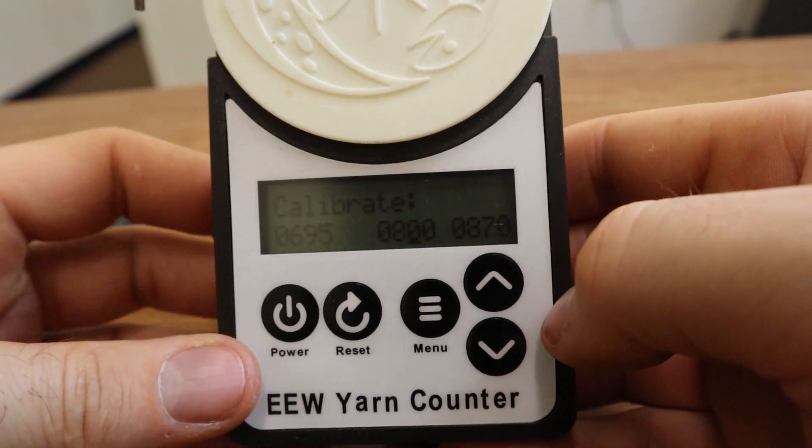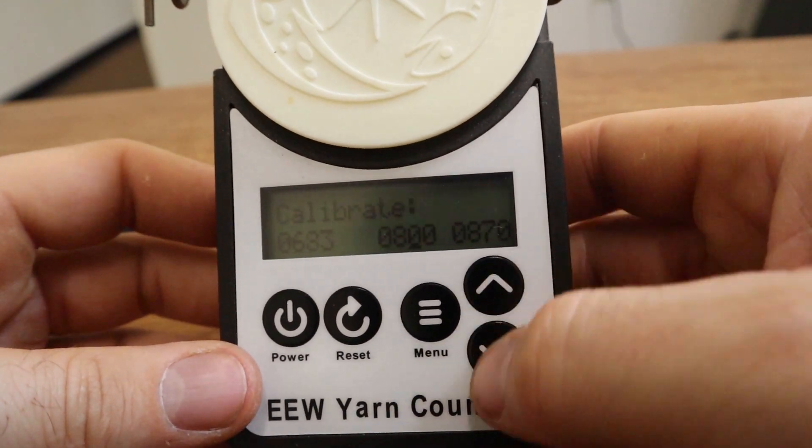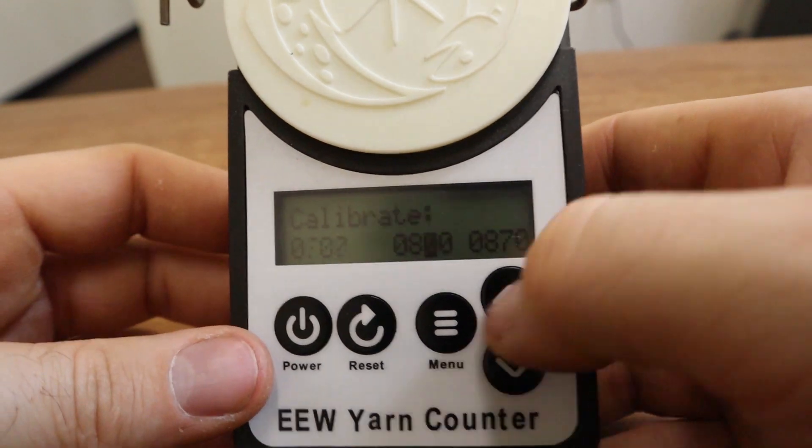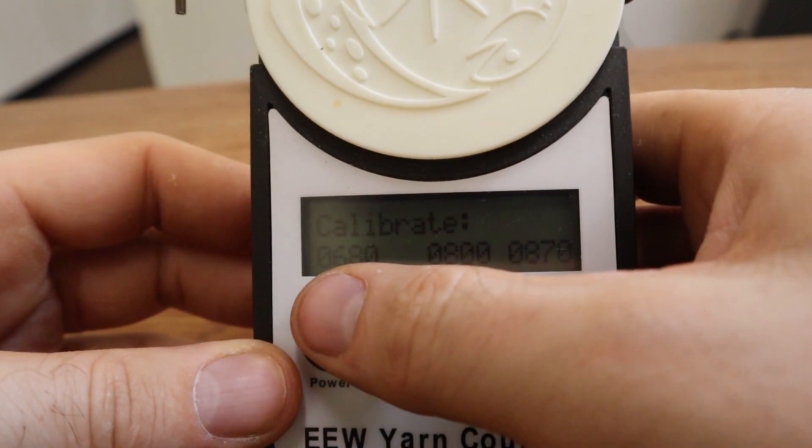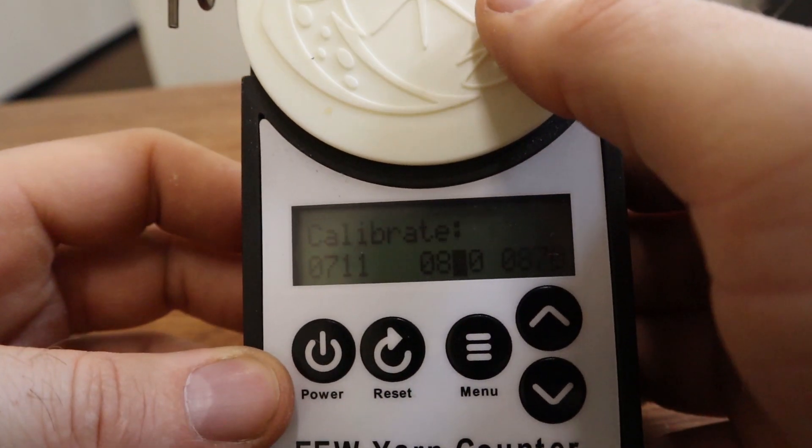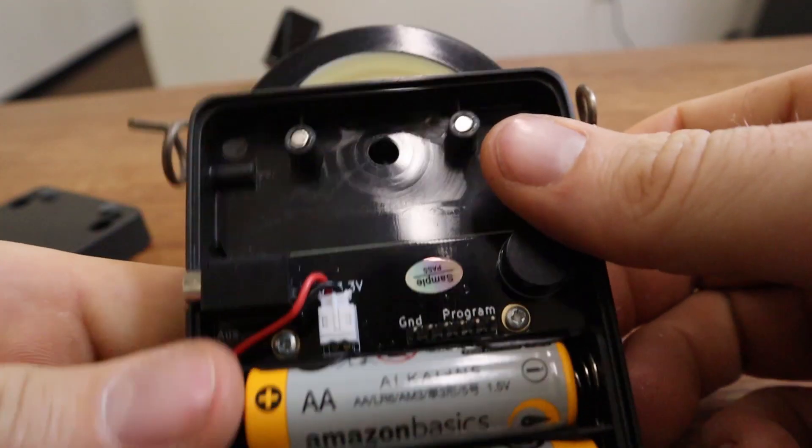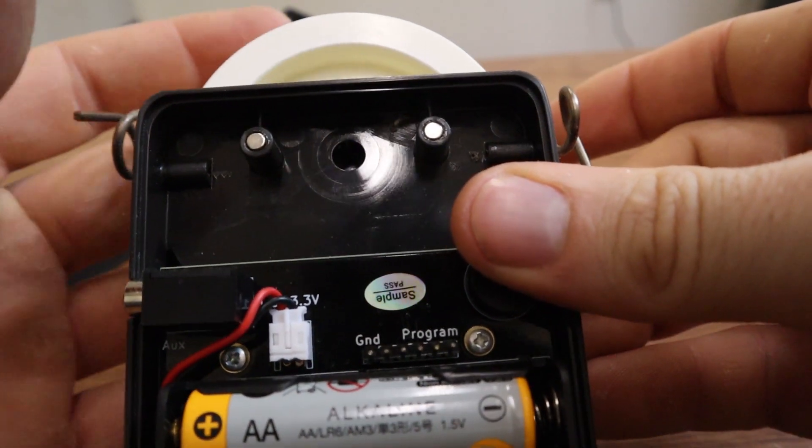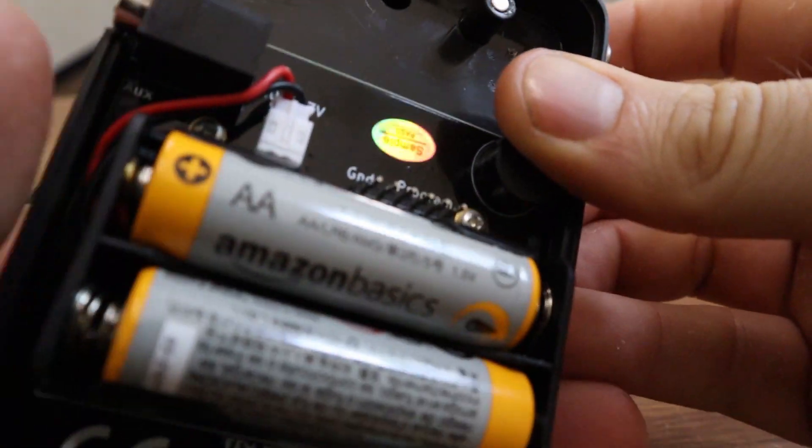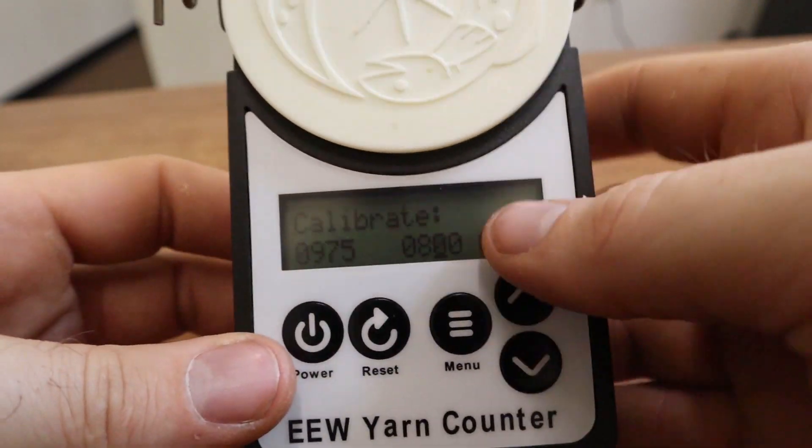So again, you should never have to change this, but this first number is the current measurement from the disk value. So this disk, if we look at the back of this disk, part of it's black and part of it's white. And as it's rotating, there's a little light sensor that detects that change.